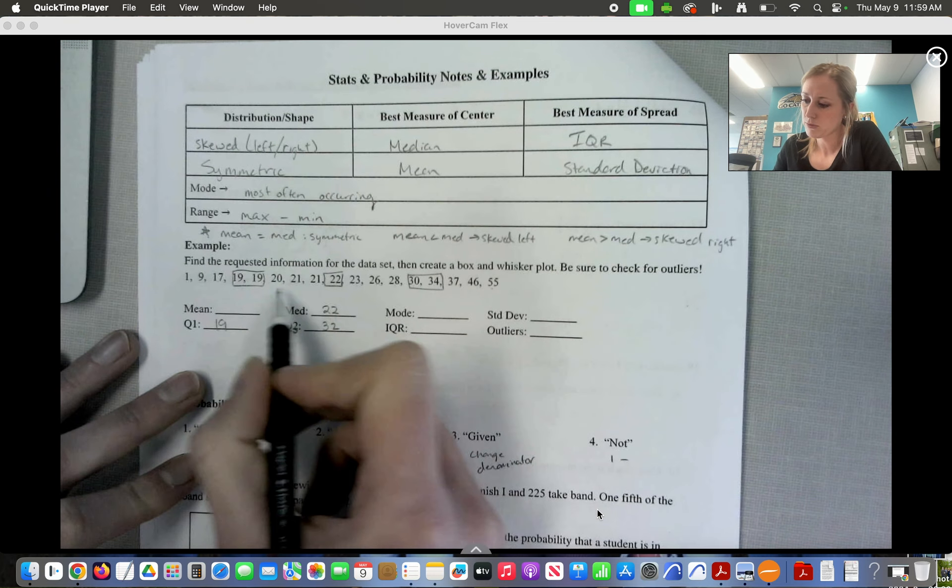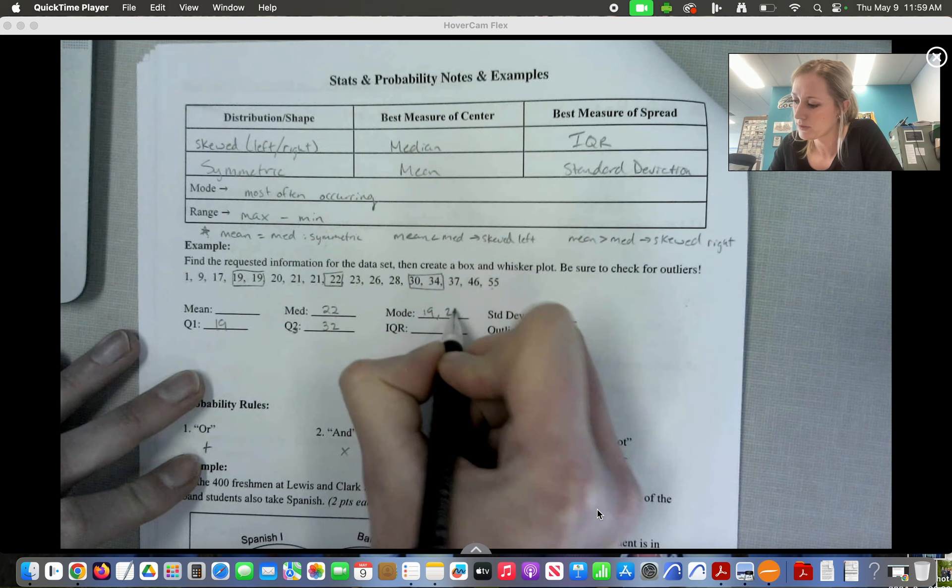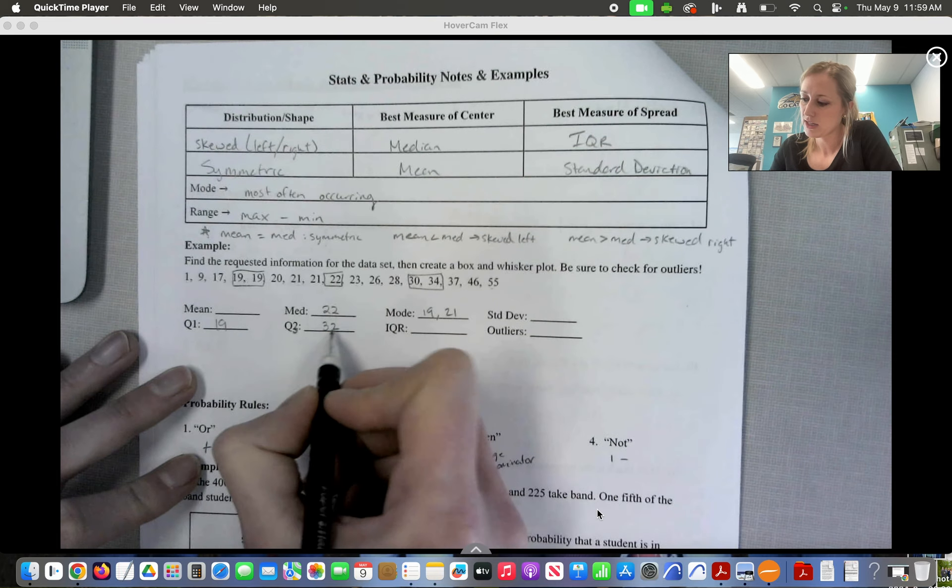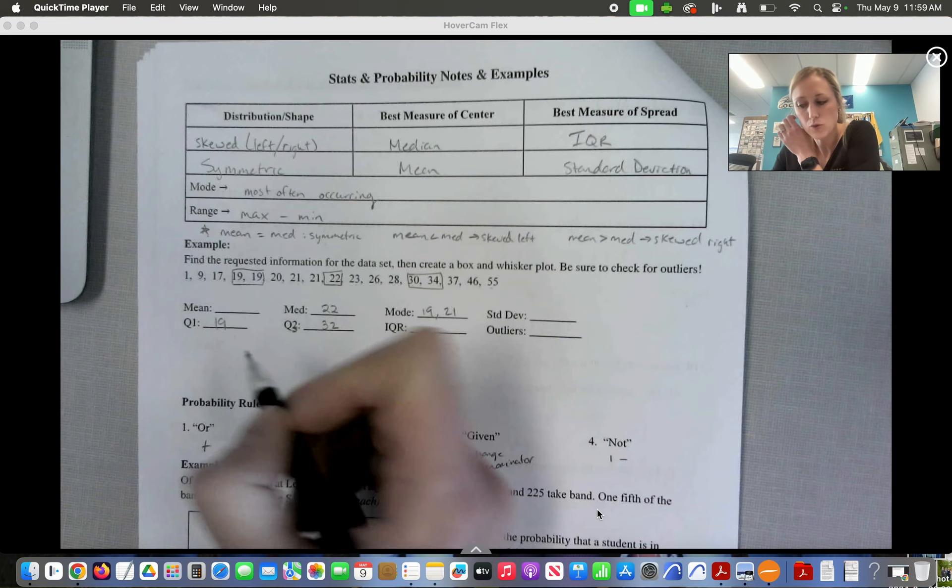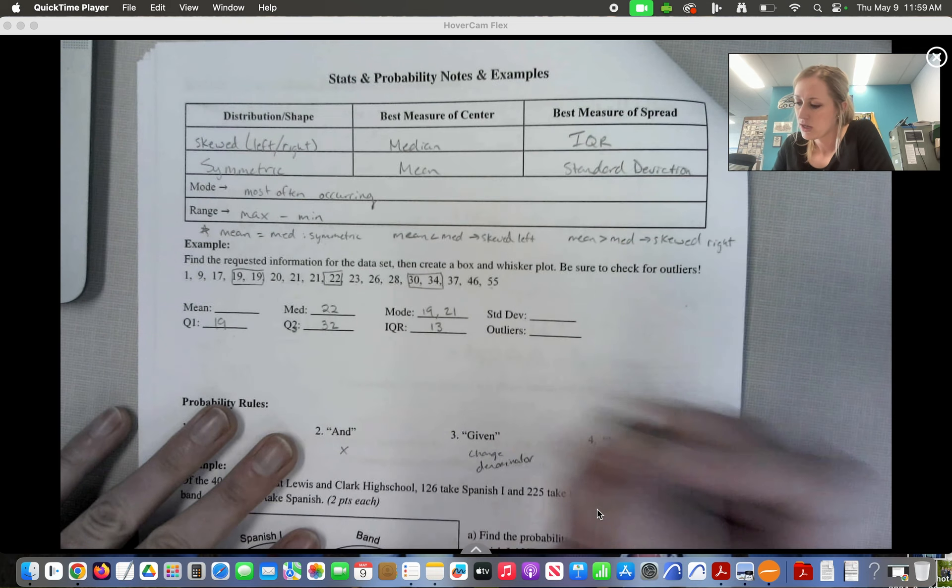Mode, which one occurs the most often? So 19 and 21 both occur twice, so we're going to list both of those. IQR is Q3 minus Q1, so we get 13 there.